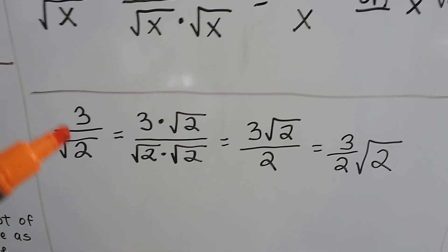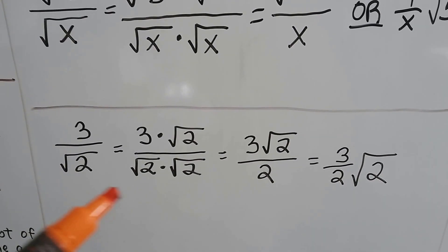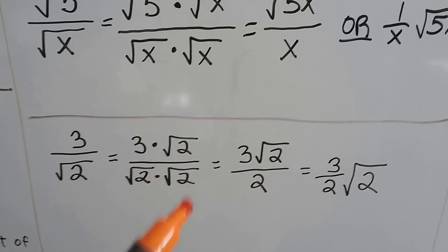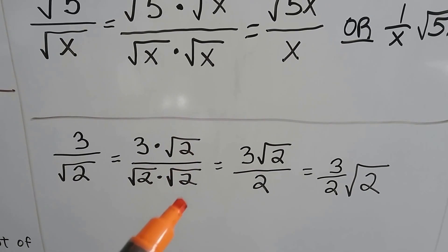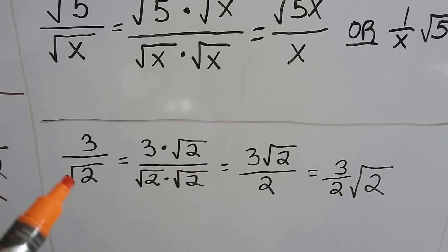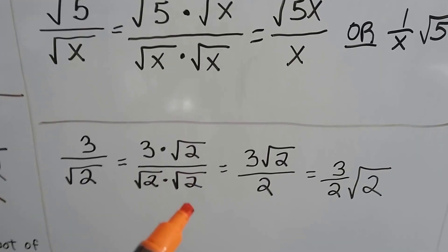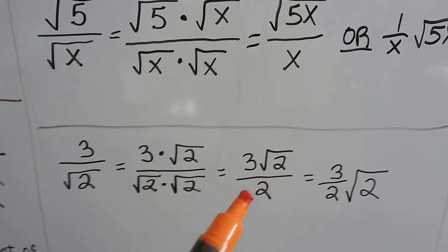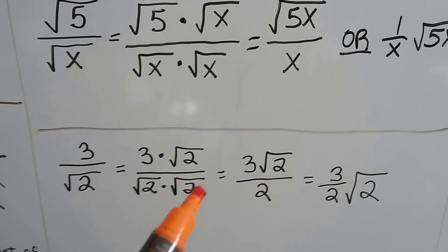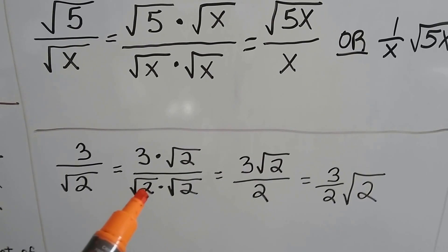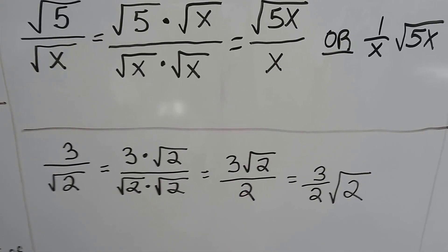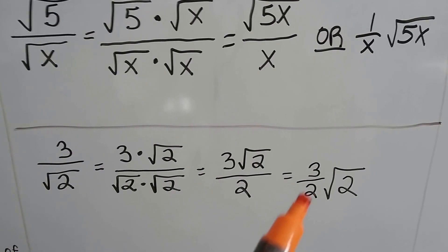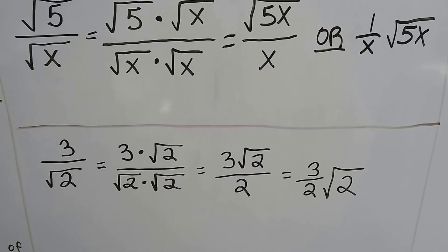We've got 3 divided by the square root of 2. We multiply the numerator and denominator by 1, written as the square root of 2 over the square root of 2. We get 3 times the square root of 2 over 2, because the square root of 2 times the square root of 2 is the square root of 4, and the square root of 4 is 2. We can also write it as 3/2 times the square root of 2.